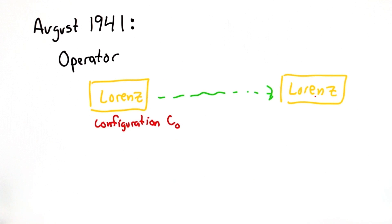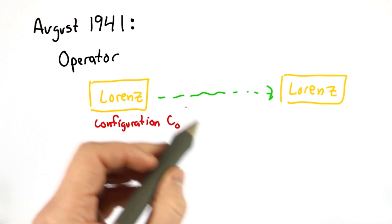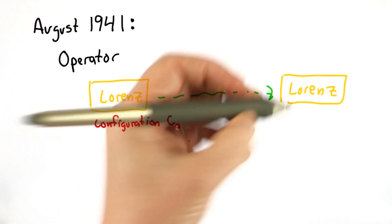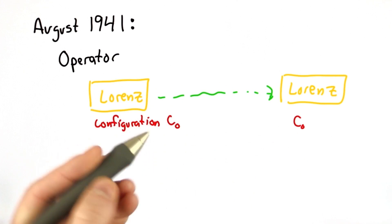These links started to be used in May 1941. In August 1941, the Allies had a big break. An operator was sending a message using a Lorenz cipher, starting with the initial configuration. These configurations came from codebooks.